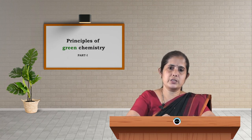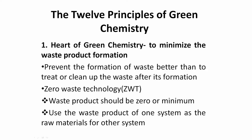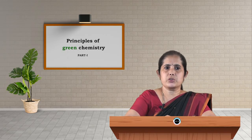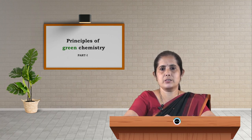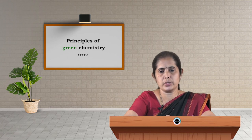Suppose some waste is formed in the reaction, what can we do? We have to use the waste product of one system as the raw material for another system. For example, bottom ash from a thermal power station can be used as raw material in the brick industry and cement industry, so this ash will not be dumped into the environment.